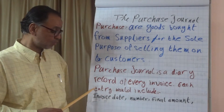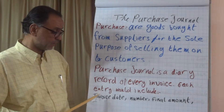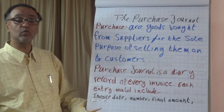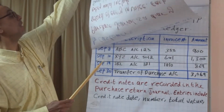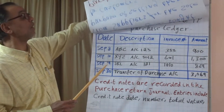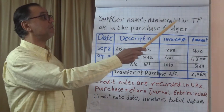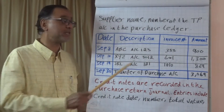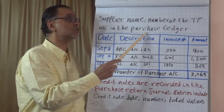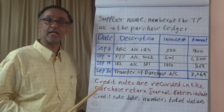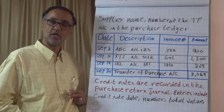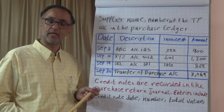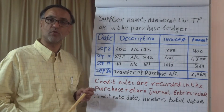The record should include invoice date, number, and final amount. It should also include the supplier name and the supplier account number in the trade payable in the purchase ledger. Remember, the trade payable in the purchase ledger is credited with all the purchase amounts to record that the supplier is a creditor of the business.